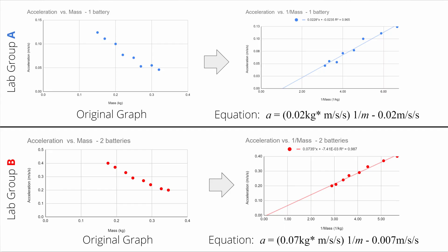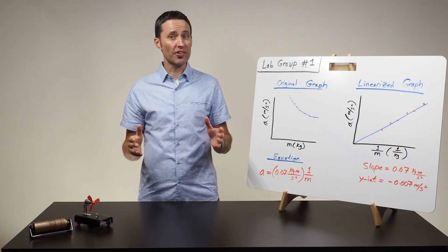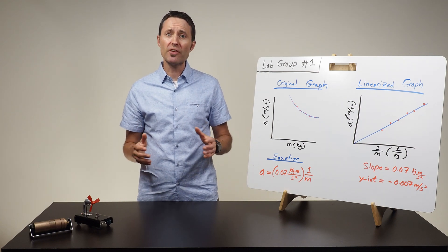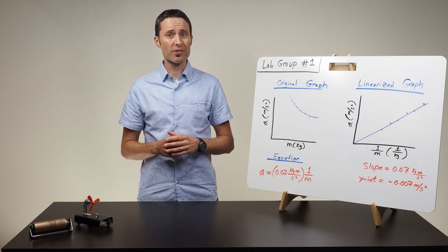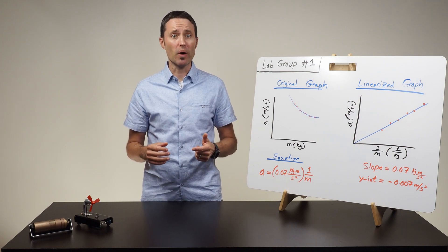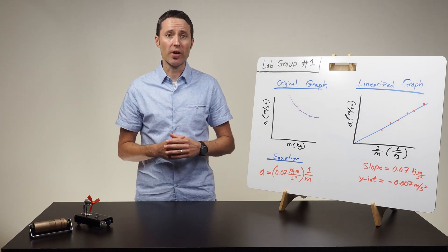Since different numbers of batteries were used in the fan carts, the students will be able to identify similar graphical shapes and y-intercept values, but different groupings of slope values. The lab groups who used fan carts with two batteries will have higher slope values than the groups who used fan carts with one battery and one spacer. This will be helpful when students discuss the meaning of the slope. The rest of the conclusion discussion should focus on the meaning of the slope and the significance of the y-intercept from the linearized graph and equation.